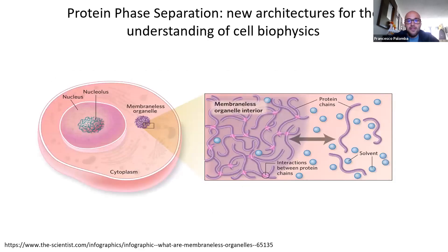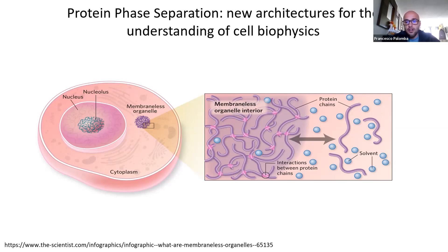What are protein phase separations? Protein phase separations are self-assembled structures. They can form thanks to the interaction of proteins with themselves or other materials inside the cell. These organelles are membrane-less organelles, meaning there is no membrane confining these structures. This gives the cell the opportunity to form and achieve new functions without the requirement of forming a membrane, which is energetically expensive.